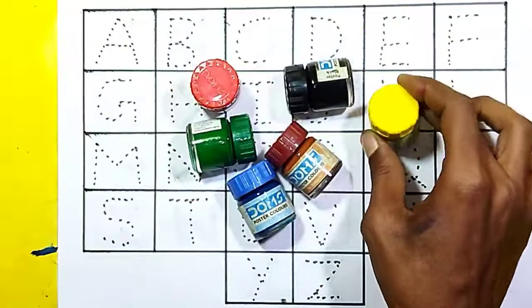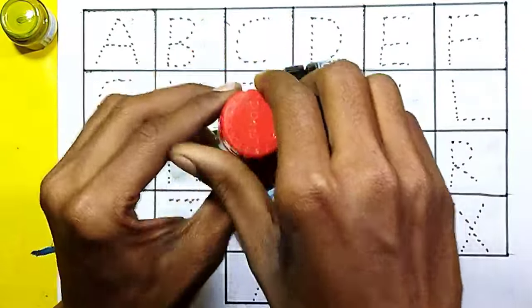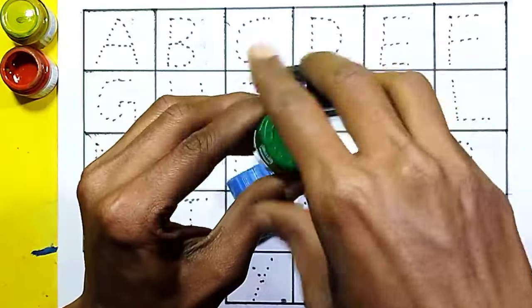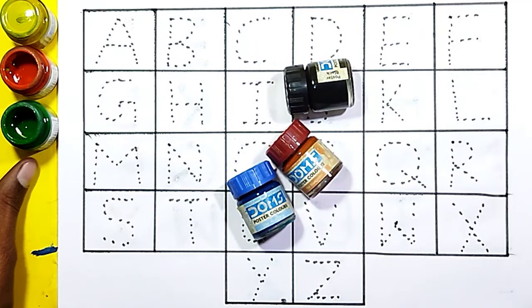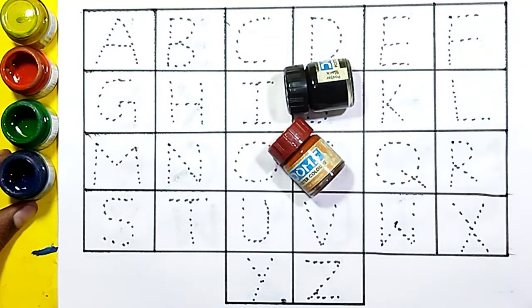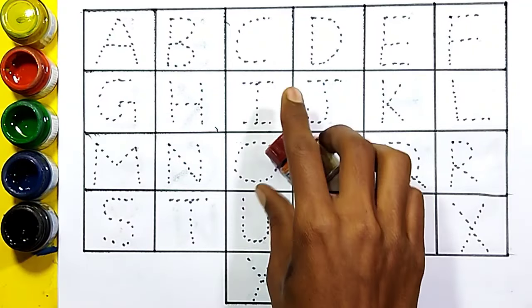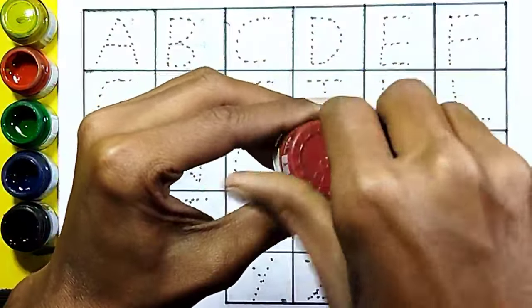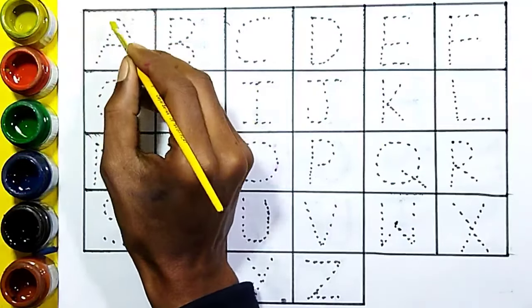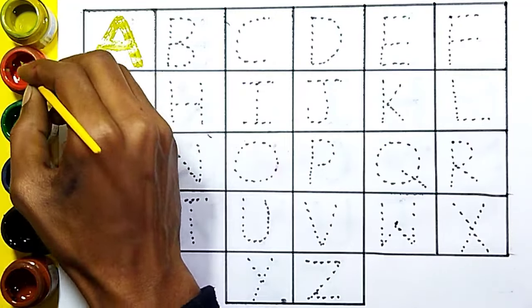Color name: yellow color, red color, green color, blue color, black color, brown color, yellow color.